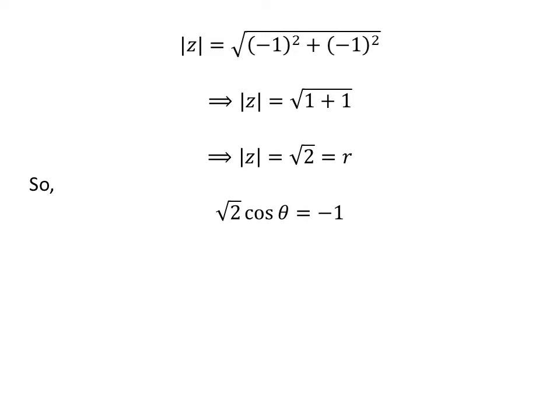As we know, r times cosine of theta is equal to minus 1, so square root of 2 times cosine of theta is equal to minus 1. Dividing the above equation by square root of 2 gives us cosine of theta is equal to minus 1 upon square root of 2.